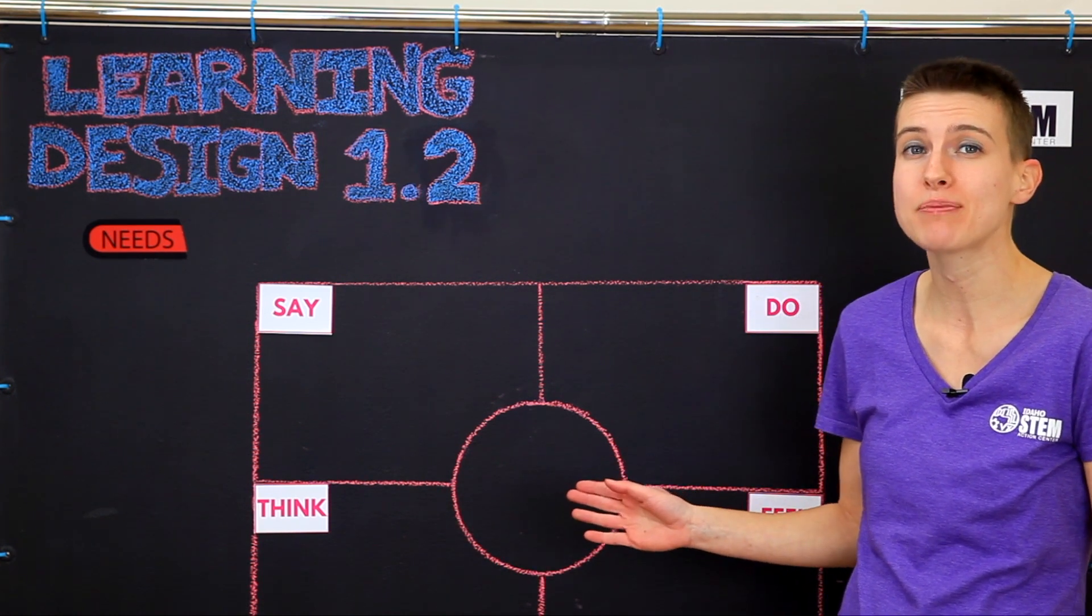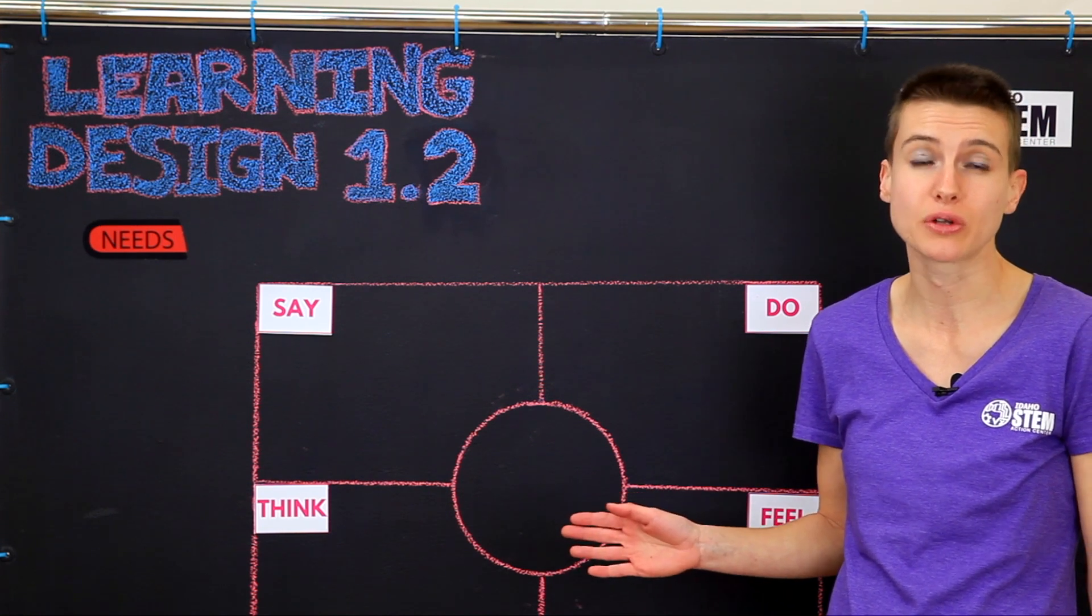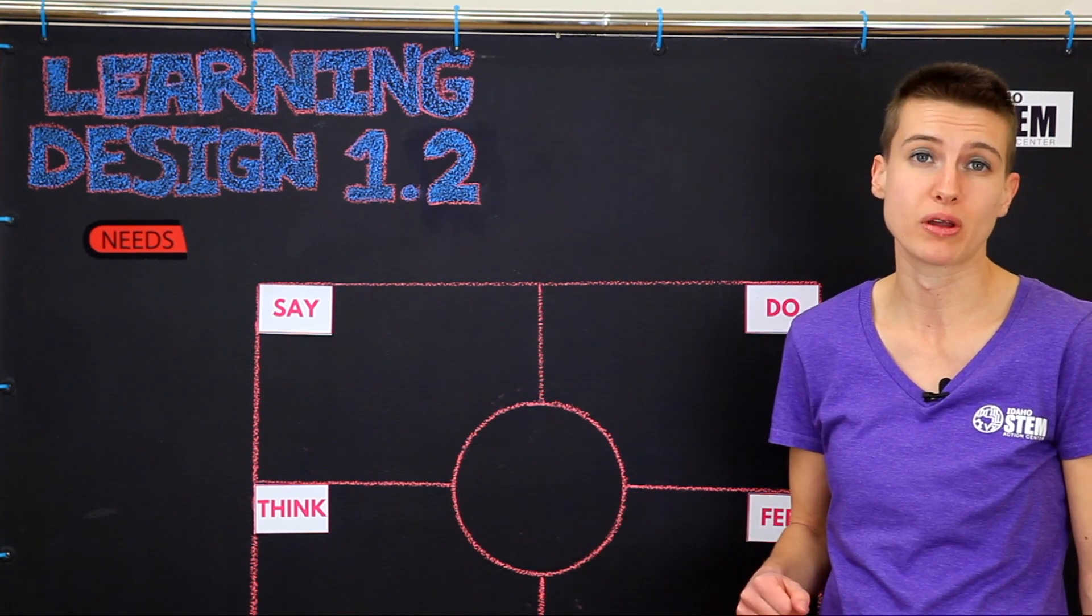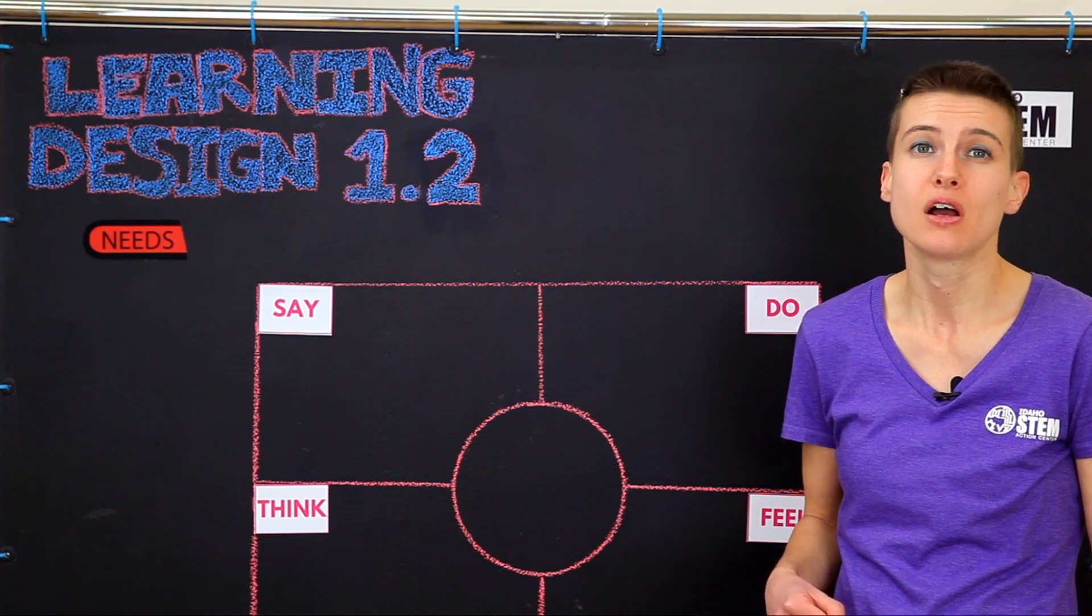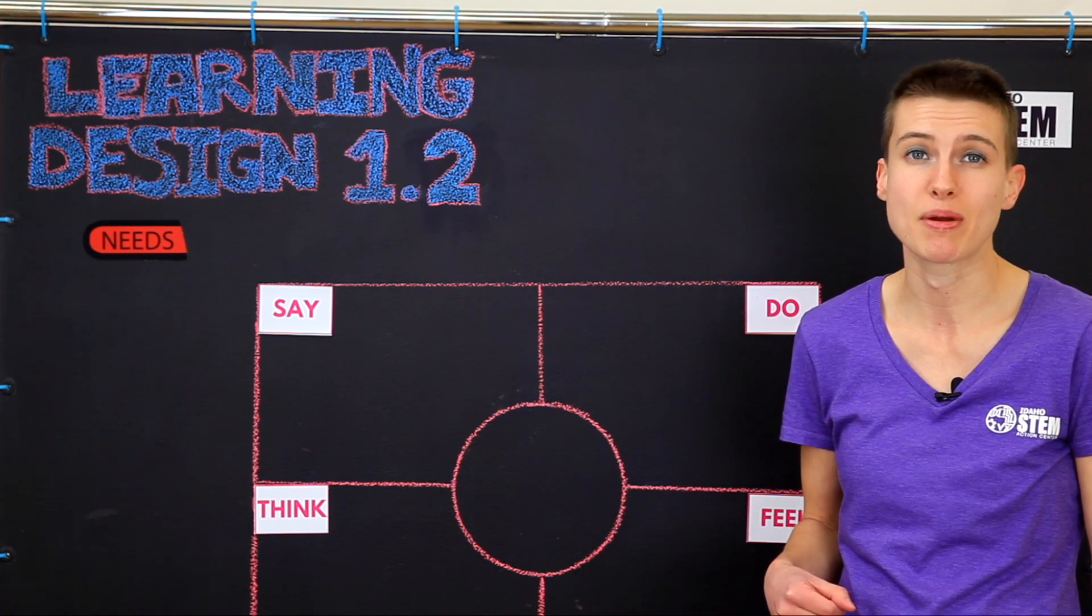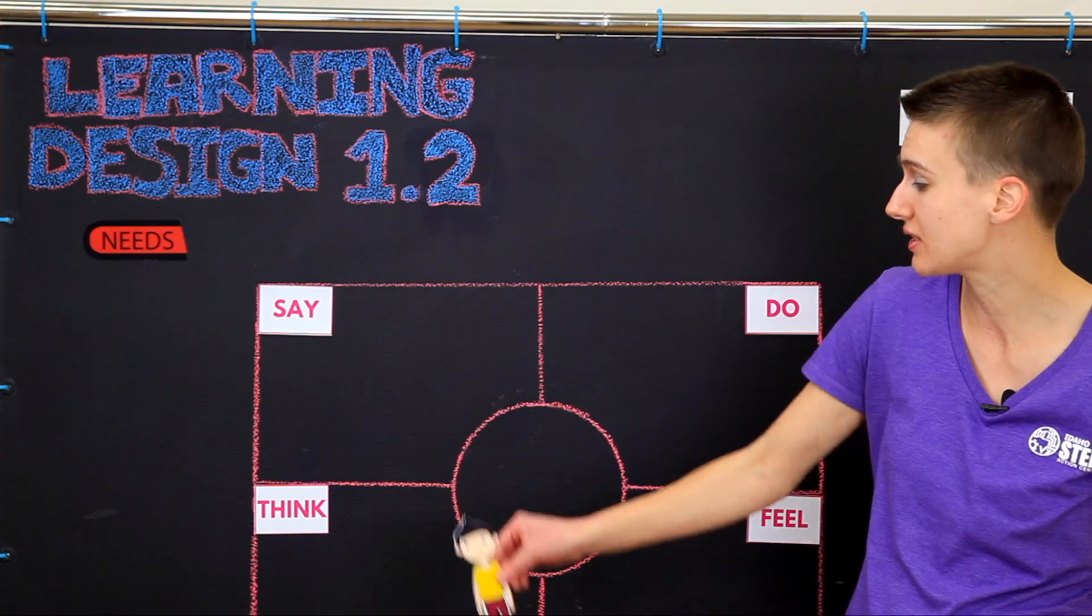At the center of your map should be an image, description, or something to represent your learner group. If you recall from 1.1, my group of learners are the kids who attend the weekly drop-in STEM program at my library, which targets kids aged 6 to 12.